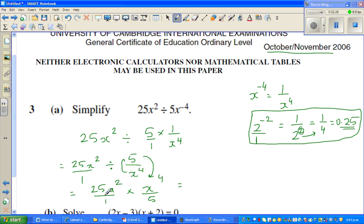And the next step, when you change this into multiplication, this will come down and this will go up. So this is 25x squared over 1 times x to the power of 4 over 5. When you're multiplying exponents or multiplying powers, you add the exponents. So this is 25x squared times x to the power of 4 over 1 times 5.